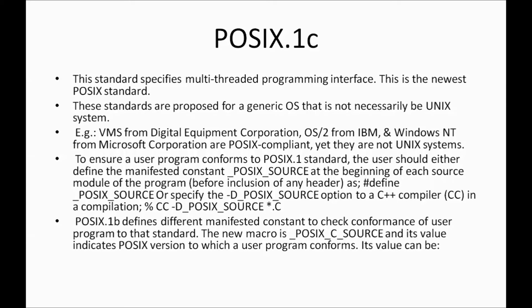These POSIX standards are not restricted to UNIX only — they can also be used for generic operating systems. For example, the Windows kernel is developed using C, the same language used for UNIX. Systems using POSIX.1c include VMS from Digital Equipment Corporation, OS/2 from IBM, and Windows NT, which is also a multi-threading system.